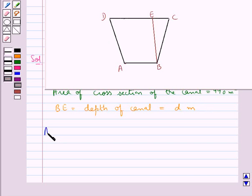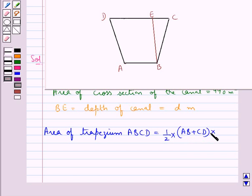So we now have the area of the trapezium ABCD is equal to half times the sum of its parallel sides, that is AB plus CD, times the distance between the two parallel sides, that is BE.